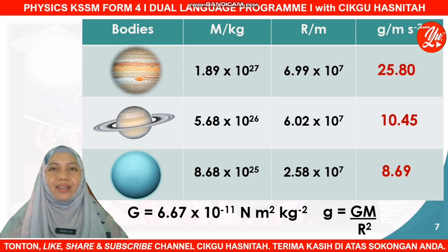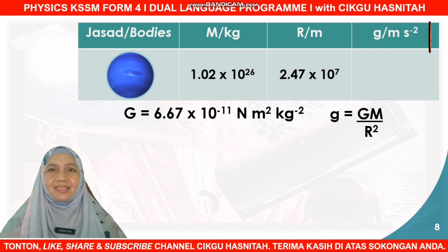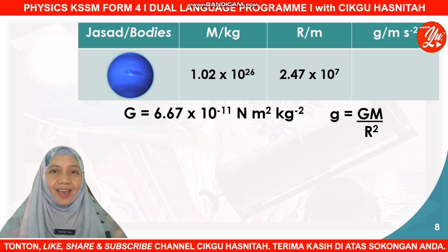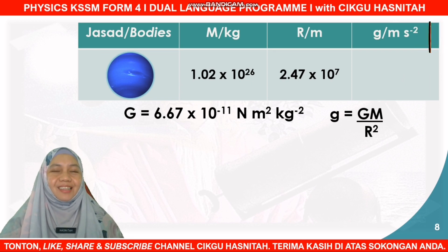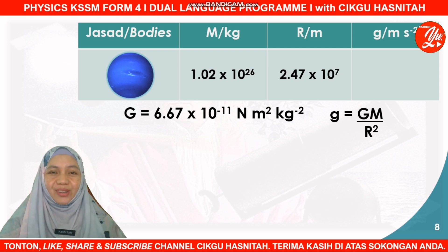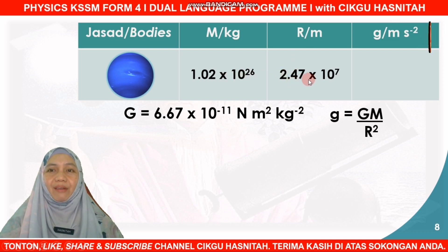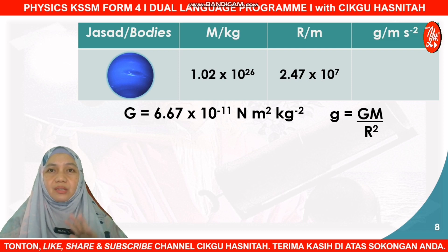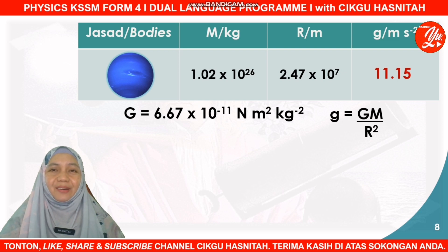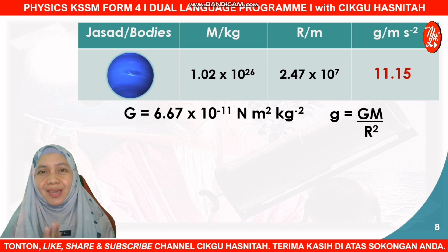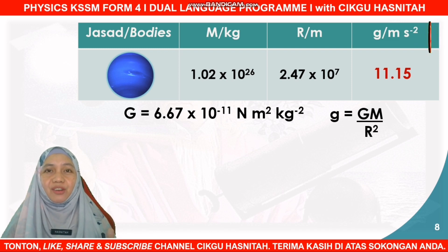Now let's check our last planet — the furthest planet from the Sun in our solar system. We call it Neptune. With a mass of 1.02 × 10²⁶ and a radius of 2.47 × 10⁷, this gives a gravitational acceleration on the surface of Neptune of 11.15 m/s². I hope you enjoyed completing the table with gravitational acceleration for each planet in our solar system.